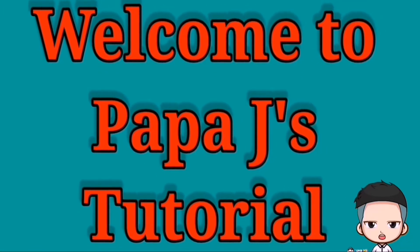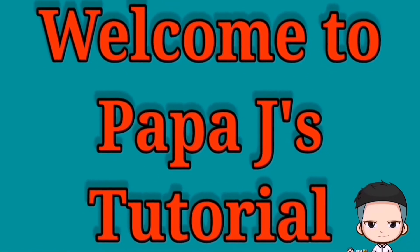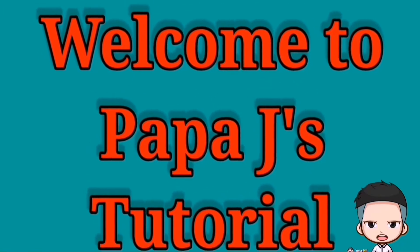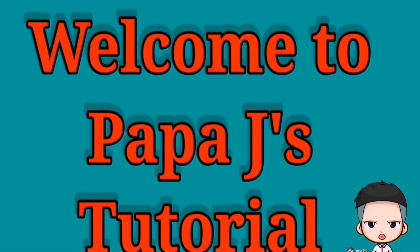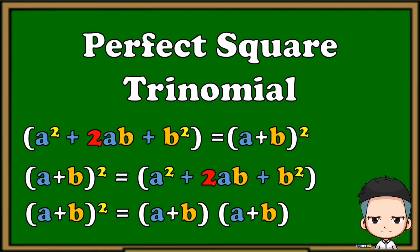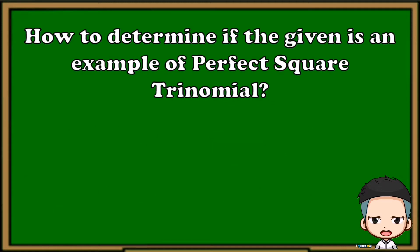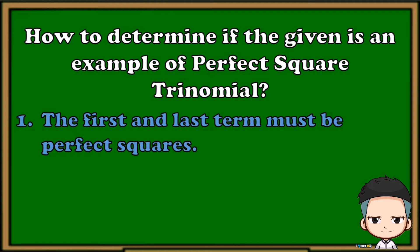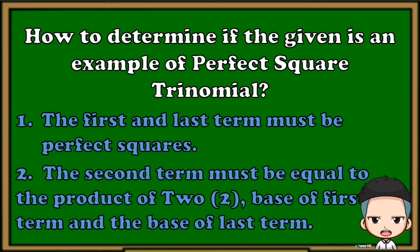What's up guys, are you ready for a new learning? I'm going to teach you as fast and as clear as possible. Our topic for today is about perfect square trinomials. To determine if the given is an example of a perfect square trinomial, we need to consider two things: one, the first and last terms must be both perfect squares; two, the second term must be equal to the product of two times the base of the first term and the base of the last term.